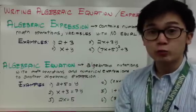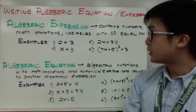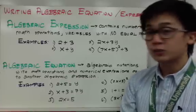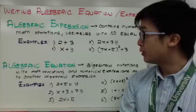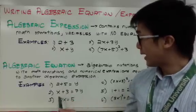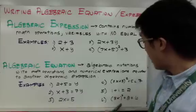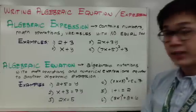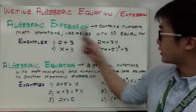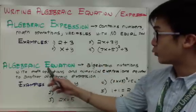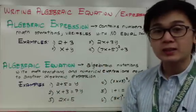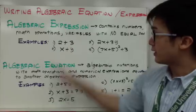An algebraic equation is an algebraic notation with math operations and numerical expressions equated to another algebraic expression. For example, 2 plus 5 equal to Y, X plus 3 equal to 7Y, and the square of 3X plus 8 equal to 6. So an expression doesn't have an equal sign, and an equation will have the equal sign symbol — that's how you look at the difference.